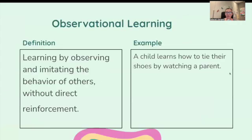Okay, let's start with observational learning. Observational learning, the definition is learning by observing and imitating the behavior of others without direct reinforcement. For example, a child learns how to tie their shoes by watching a parent.